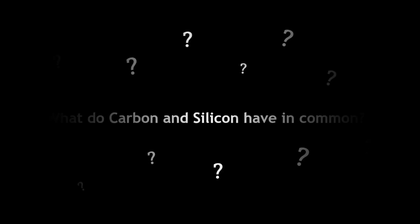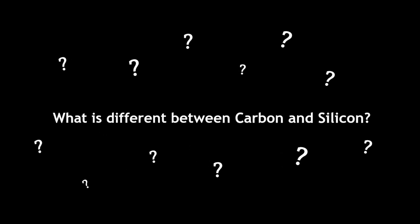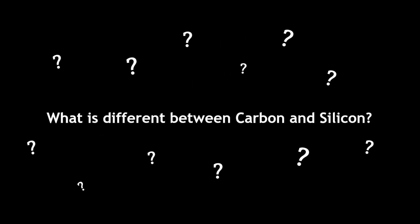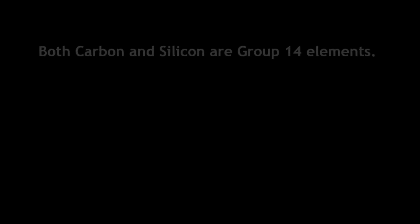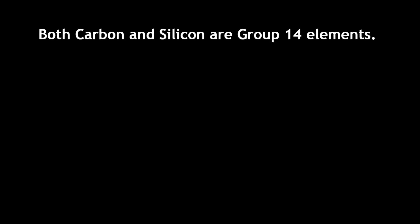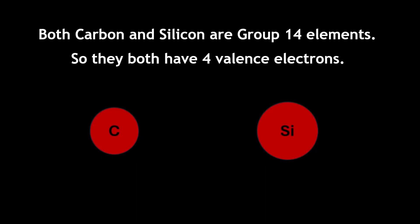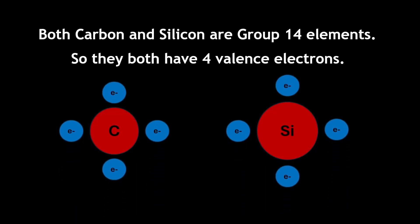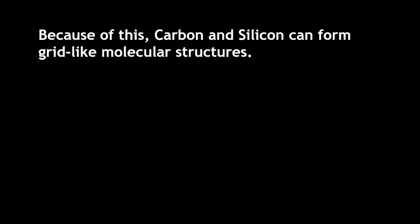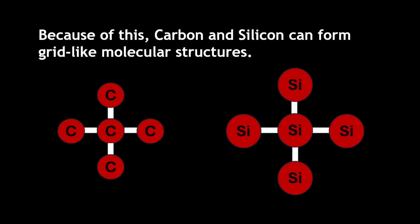Before we can discuss the effects of carbon and silicon being switched, we must first highlight some similarities and differences between the two elements. Firstly, they are both group 14 elements, meaning they have four valence electrons. Because of this, carbon and silicon can form grid-like molecular structures with four covalent bonds connected to each atom.